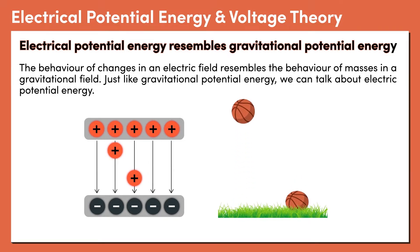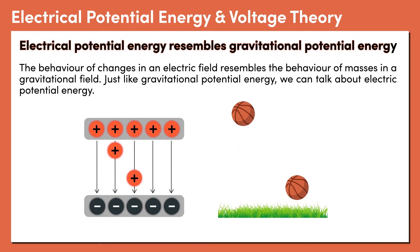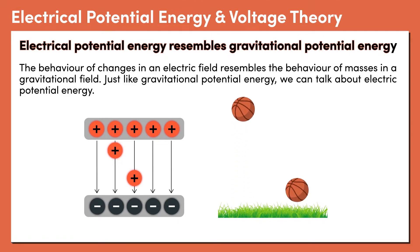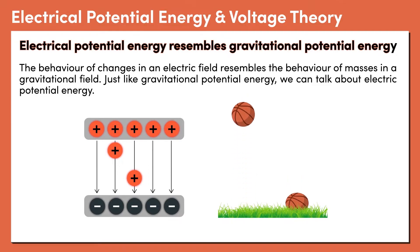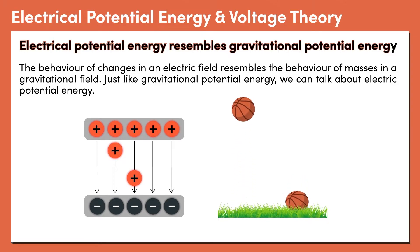Consider the example where we have two charged parallel plates, and we are moving positive charges against the electric field between the plates. As we move the positive charges away from the negative plate, which they are attracted to, and towards the positive plate, which is repelling them, the positive charges have to work against this electric field created between those two oppositely charged parallel plates. The charge that has moved the greatest distance away from the bottom negatively charged plate will have the highest potential energy, because it has to do the most work to get to that position.